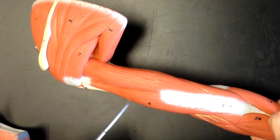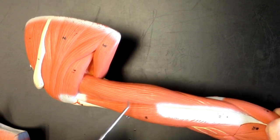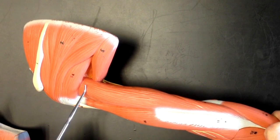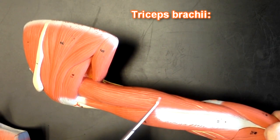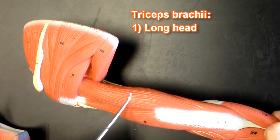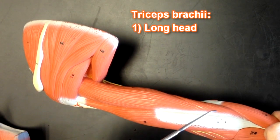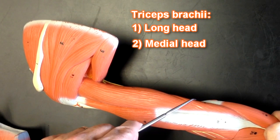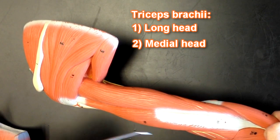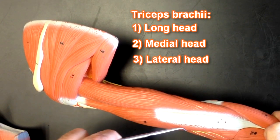On the back of the arm we would be able to see the triceps. The triceps has three heads. This head right here is the long head of the tricep. Then we've got the medial head of the tricep. And finally the lateral head.